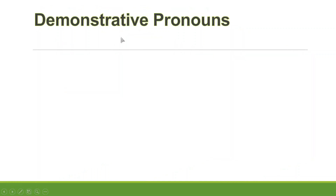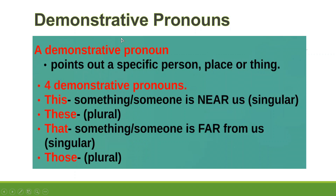Demonstrative pronouns point out a specific person, place, or thing. When you're talking to someone and pointing out a person or a place, you're going to use four different demonstrative pronouns: this, these, that, and those. When you're using 'this,' you're talking about something or someone that is near you, and you're referring to singular — meaning there's only one thing, person, or place.